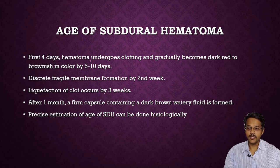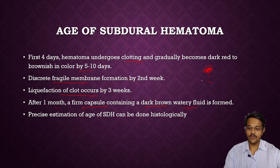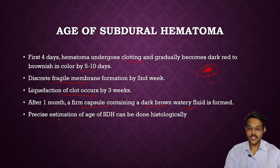Age of subdural hemorrhage: in the first four days, the hematoma undergoes clotting and becomes dark red. From 5 to 10 days, it becomes dark red to brownish color with fragile membrane formation. By two weeks, liquefaction of the clot occurs. By three weeks to one month, a capsule containing dark brown watery fluid is formed. Precise estimation of the age of subdural hemorrhage can be done histologically, which is more accurate than gross changes.